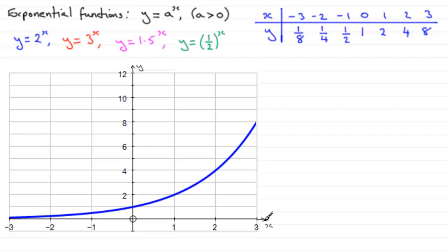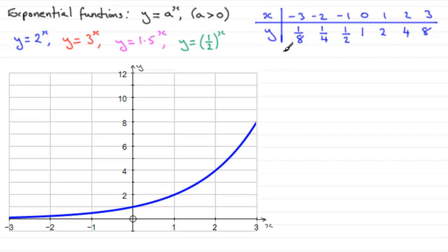The graph rises very rapidly as x increases to the right. For x equals 4 the value would be 16, and for x equals 5 it would be 32 — so you can see it shoots up steeply. That is the graph of y equals 2 to the power x.